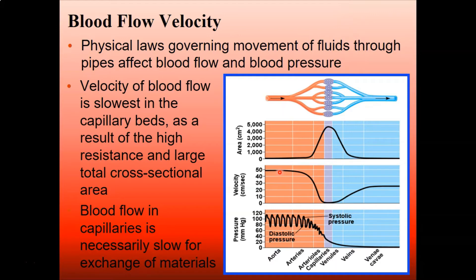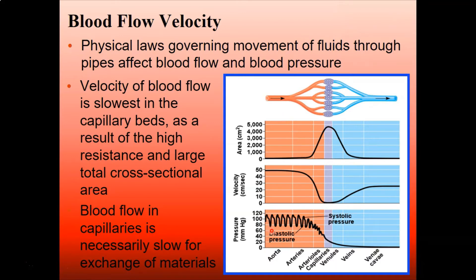Blood slows down at capillary beds because the vessels are so thin and blood travels single file, allowing exchange of materials. Then when you're done exchanging — mainly dropping off oxygen and picking up CO2, among other materials — you go back to the heart through veins and speed up a bit, thanks to your muscles. Look at the pressure in those arteries: that's why when you get your blood pressure taken, we use an artery. But once you start losing pressure at the capillary beds, the pressure is low.